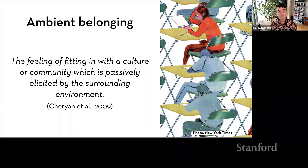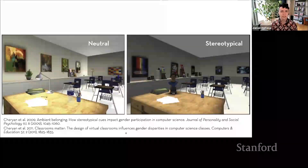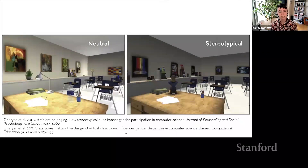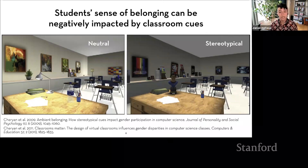Ambient belonging is a term that describes the feeling of fitting in with a culture or community that's passively elicited by the surrounding environment. It's a psychological concept from a broader literature on belongingness, going back to Abraham Maslow's hierarchy of needs. Belongingness describes the psychological need to be accepted as a member of a group. Prior research had examined ambient belonging in physical spaces like professors' offices — stereotypical cues in offices and classrooms, like what books were on the table or what posters were on the wall, could have a negative effect on students from marginalized groups.